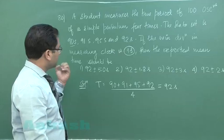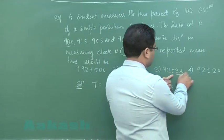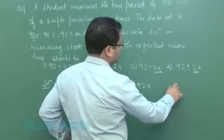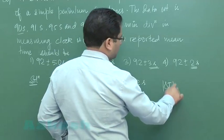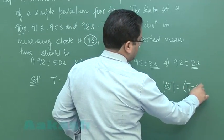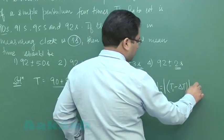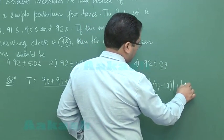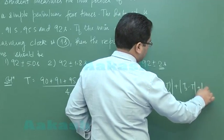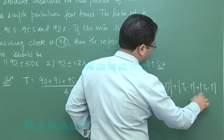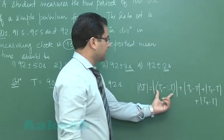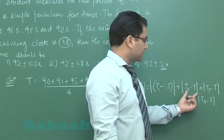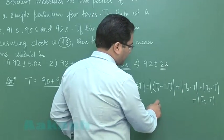This is the absolute error or what we call the mean absolute error. Let's try to find delta t. That value would be the magnitude of (t1 - t̄) + (t2 - t̄) + (t3 - t̄) + (t4 - t̄). These are the errors of each reading: measured value minus original value. We take the mean of all divided by four, which gives us the mean absolute error.